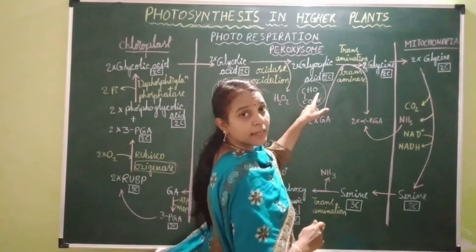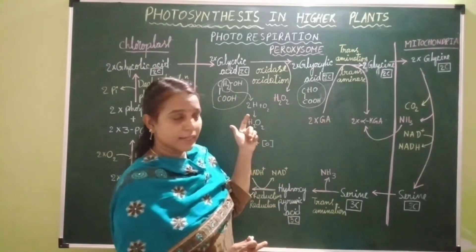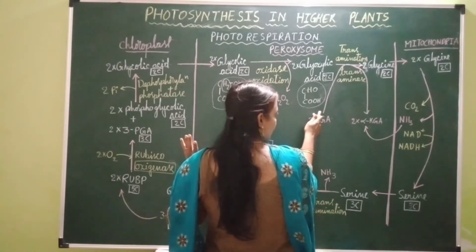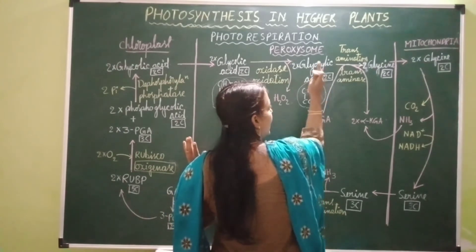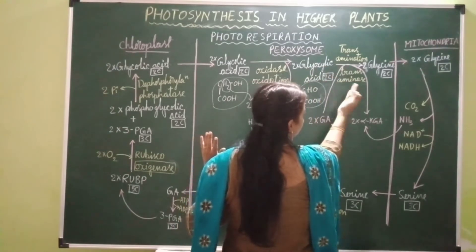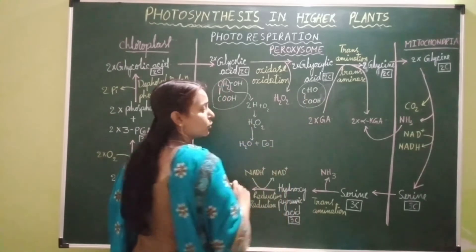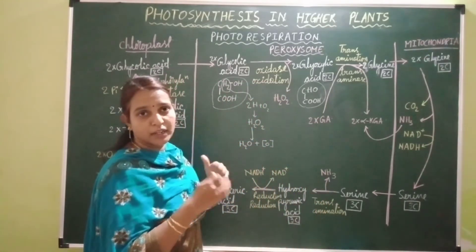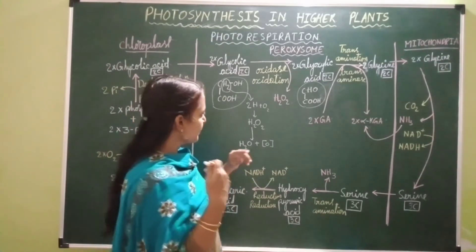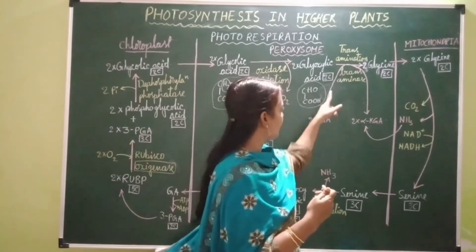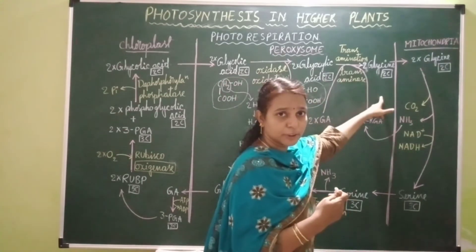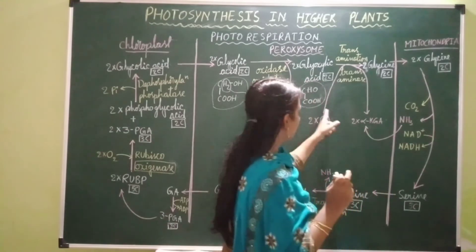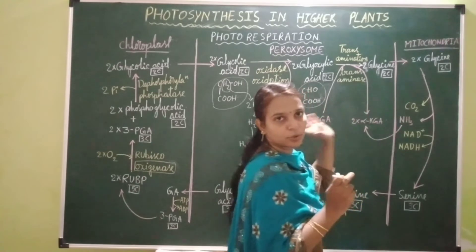This glyoxalic acid undergoes transamination by the enzyme transaminase into two molecules of glycine, which is a two-carbon amino acid. During transamination, an amino group is transferred onto glyoxalic acid. Glutamic acid donates this amino group — two molecules of glutamic acid donate two amino groups to the two molecules of glyoxalic acid, converting them into glycine. After donating the amino group, glutamic acid is converted into alpha-ketoglutaric acid.